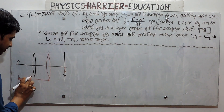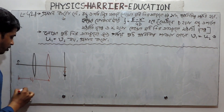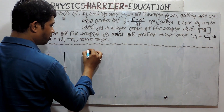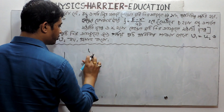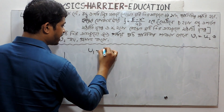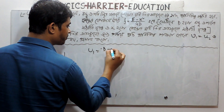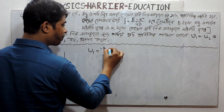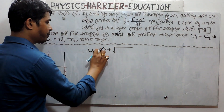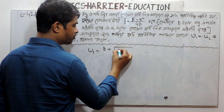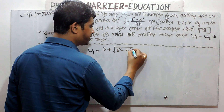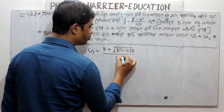It is definitely u1. And therefore u1 is equal to 4. So u1 is equal to d minus d plus root over d square minus 4fd by 2.